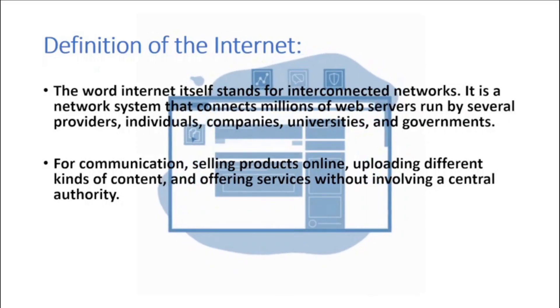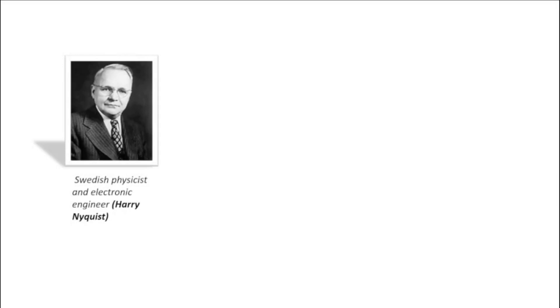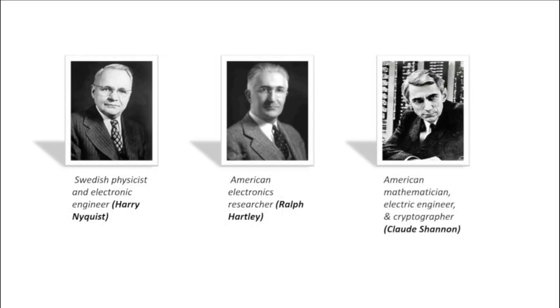A brief history of the internet: the concept of interconnected computer networks arose from the fundamental theoretical work of information theory — a mathematical study of quantification, storage, and communication of digital information. The theory was developed by Swedish physicist and electronic engineer Harry Nyquist and American electronics researcher Ralph Hartley in the 1920s. In the 1940s, American mathematician, electrical engineer, and cryptographer Claude Shannon provided a firm understanding of trade-offs between signal-to-noise ratio, bandwidth, and error-free transmission in the presence of noise.